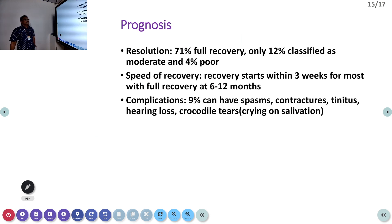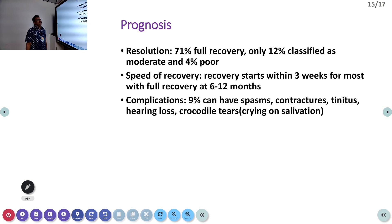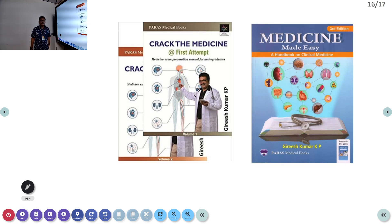Prognosis: 71% of patients achieve full recovery, only 12% have moderate recovery, and 4% have poor recovery — mostly due to delayed treatment. Some patients start recovering within one week, while most begin recovery around three weeks. Later complications include spasms, contracture, tinnitus, hearing loss, and crocodile tears — where patients cry when they see food due to altered innervation of the glands.